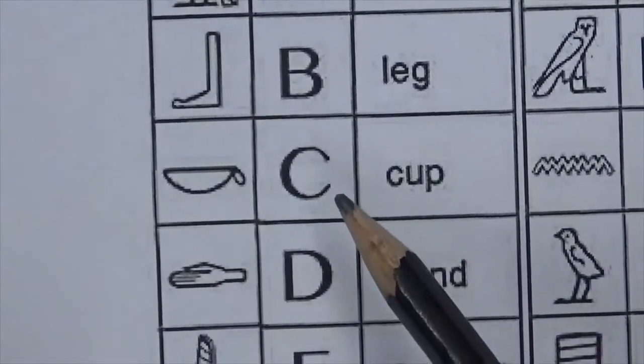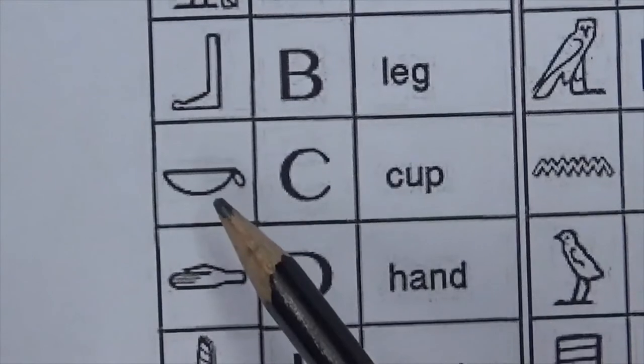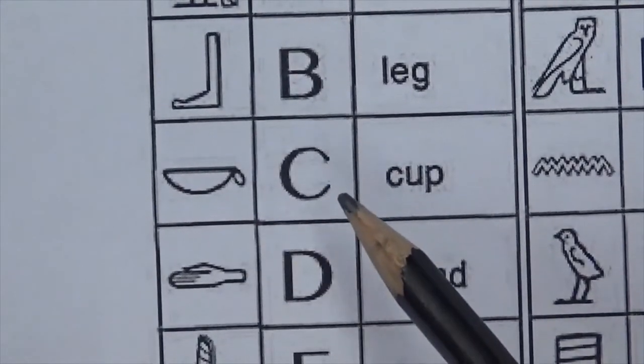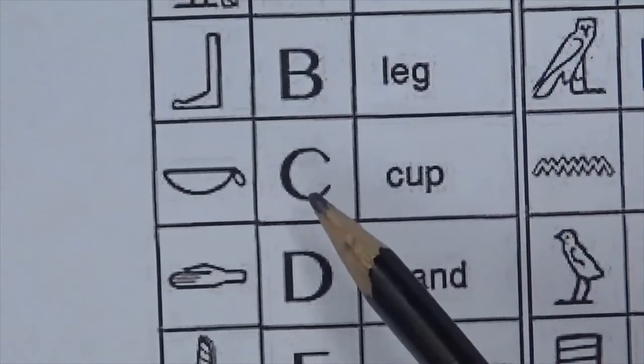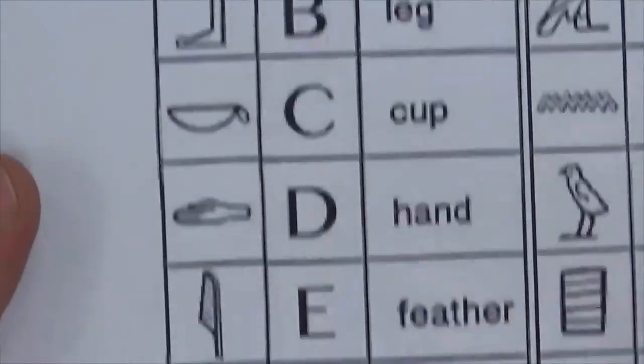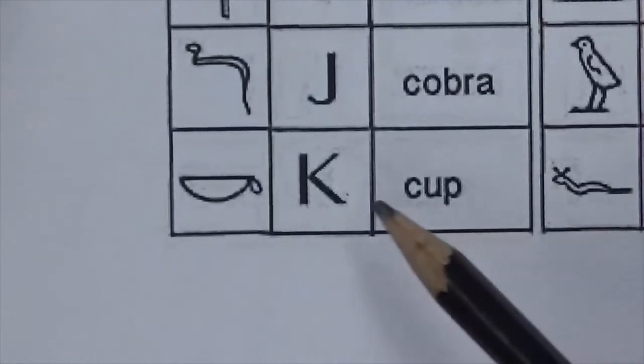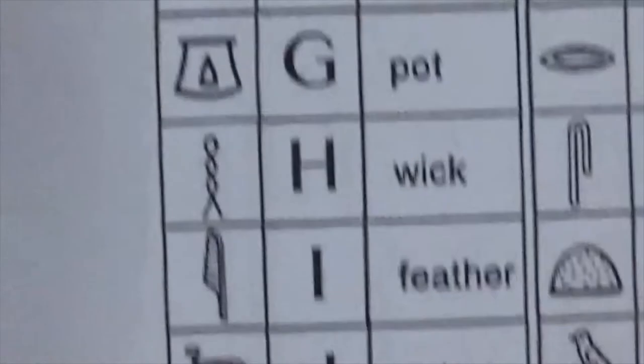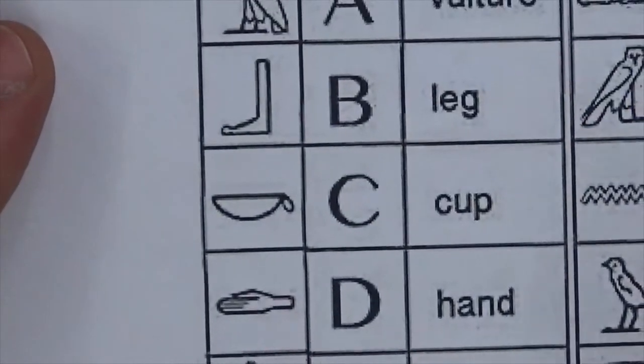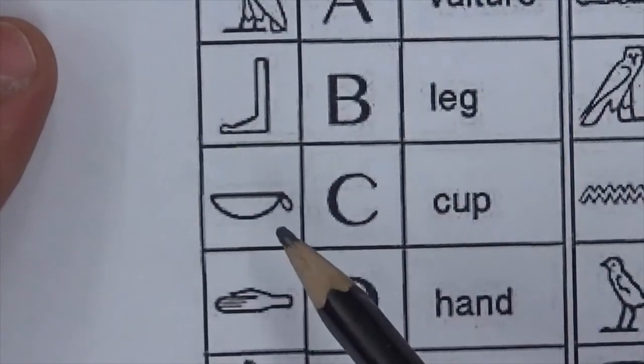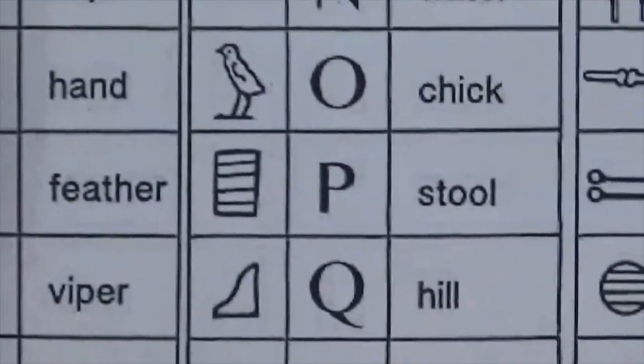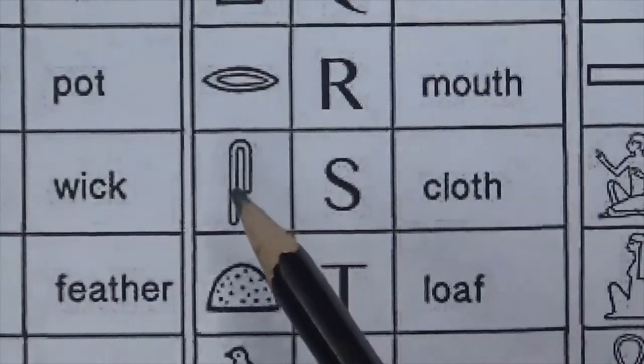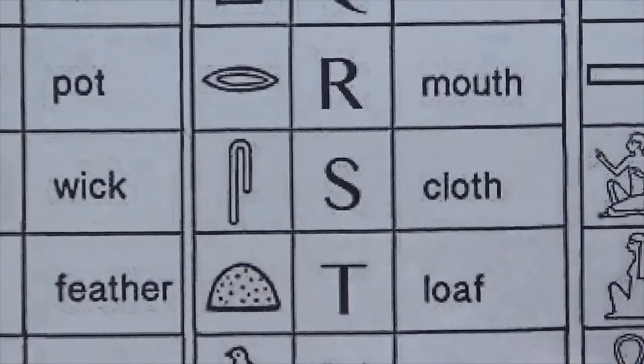So see the letter C right here is pictured like a cup or a bowl. But that's only if it makes the K sound, like in the name Caitlin. If it starts with a C, you'd want to use that. And if you notice, it's the same for a K right. Cut is pictured with a cup. But if your name starts with a C but it makes an S sound like Celia, you'd want to use a different symbol like the one for the cloth, because that makes the S sound.